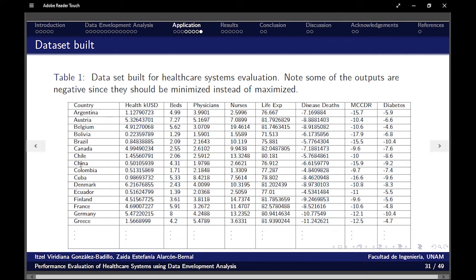So this is a part of the dataset built. Note, here is the country, the country name. Here are the inputs, and those four, here are the outputs. Note that some of them have a minus sign. Why? Because data envelopment analysis models that we saw are to maximize outputs, but we don't want to maximize the disease, death, mortality, and diabetes. So we give it a minus sign. So we say that we want to minimize that value.